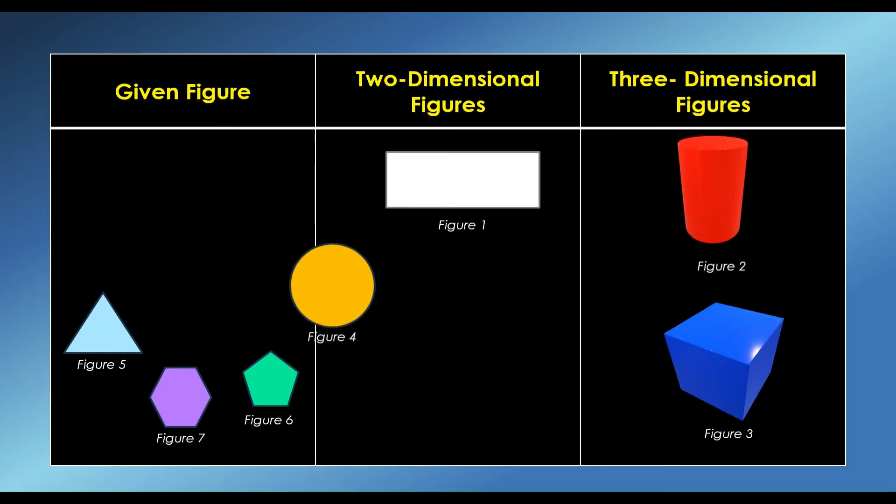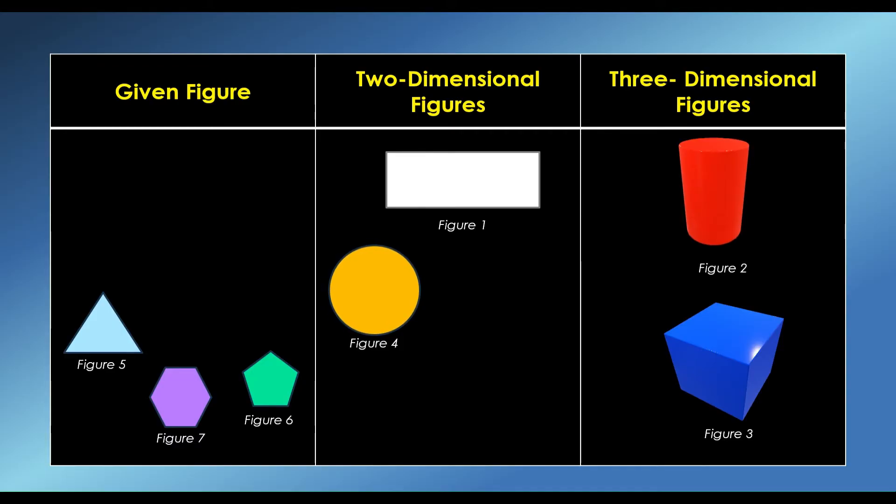Figure 4 is a circle. A circle is a closed 2D figure in which the set of all the points in the plane is equidistant from a given point called the center.